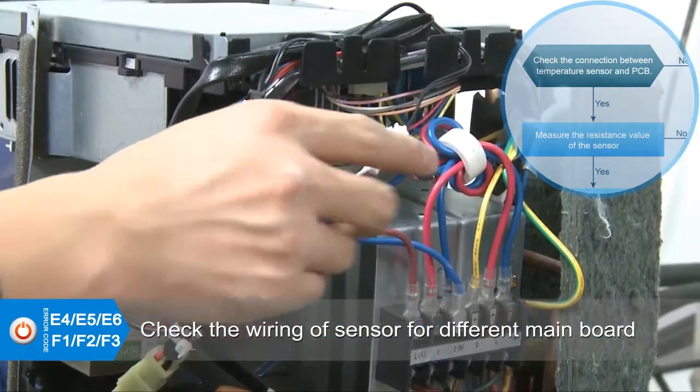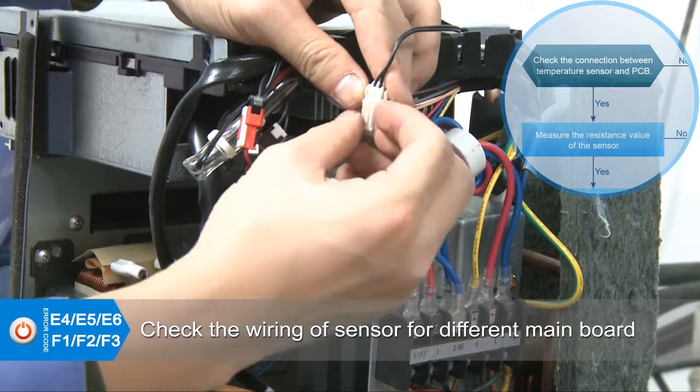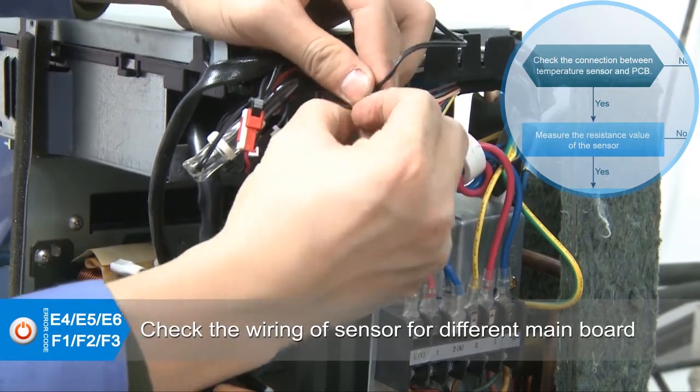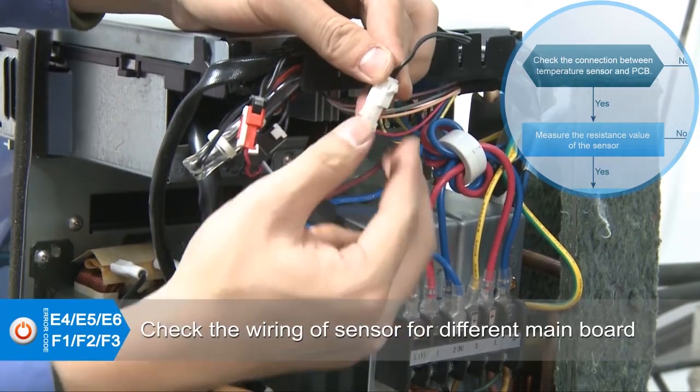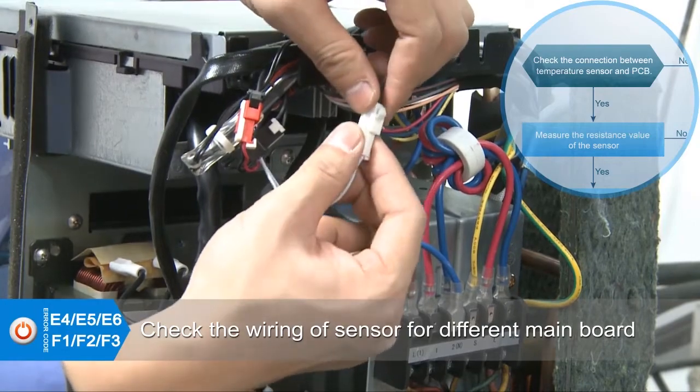If the wiring of the sensor is correct, check the resistance value of the sensor. Remove the protective buckle. Pull out the plug.